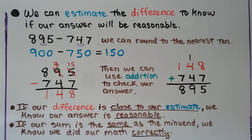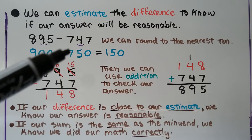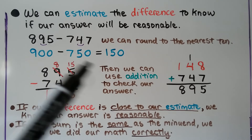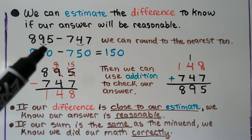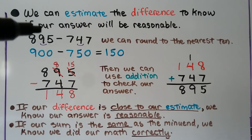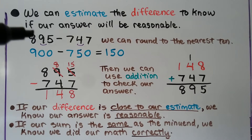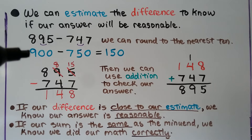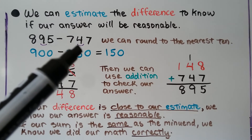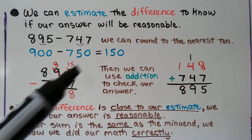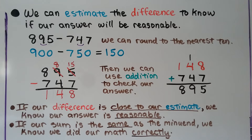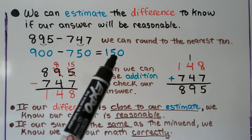We can estimate the difference to know if our answer will be reasonable. 895 minus 747. We can round these to the nearest 10. We mark the tens place to make sure we're rounding to the correct place. This 5 tells the 9 to go up one more 10 — we have 9 tens going to 10 tens, so we add 10 tens as 100 to the hundreds place. That rounds to 900. This 7 is telling the 4 to go up 1, then it becomes 0, so that rounds to 750. When we have 900 minus 750, it equals 150. So we know our difference needs to be around 150 to be reasonable.